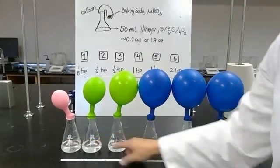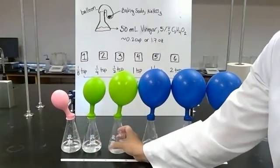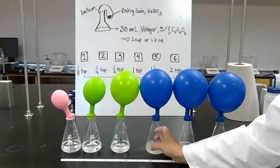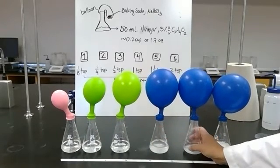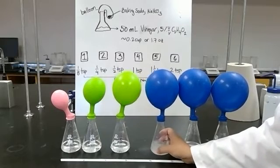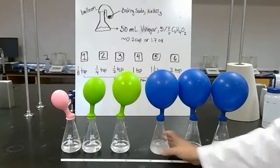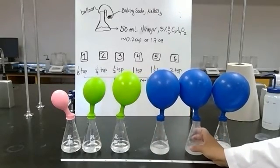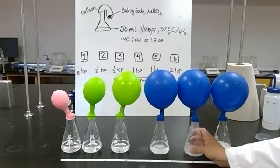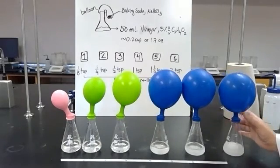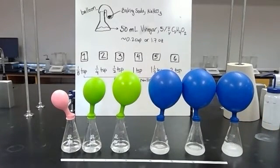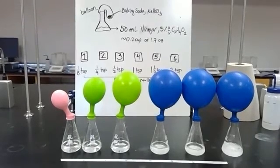It looks like our first three reactions are just about done. We will be using this visual information, but also we'll be doing calculations to determine when is the baking soda the limiting reactant in the reaction, and when is the acetic acid or vinegar the limiting reactant in the reaction. Just looking at the balloon sizes now,